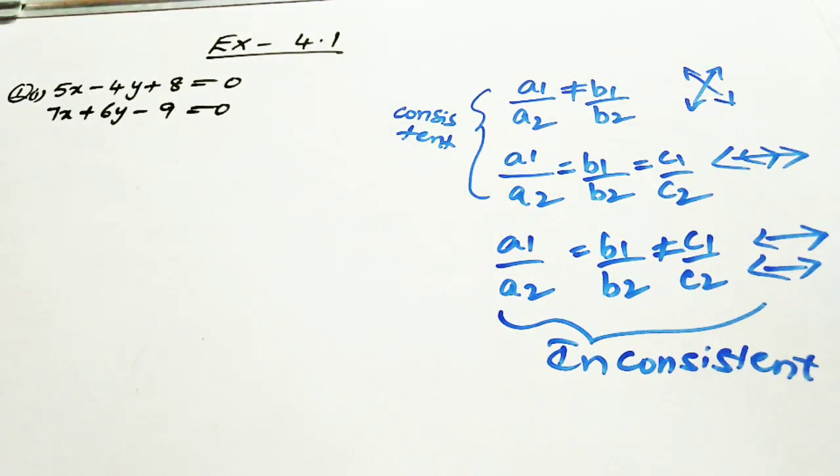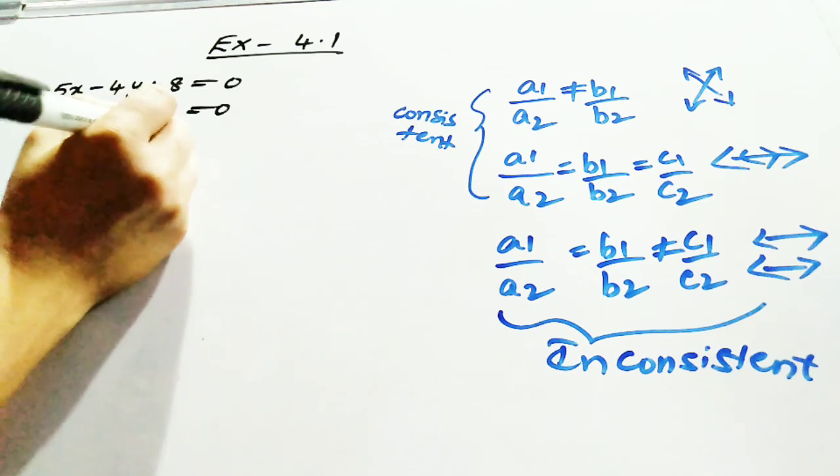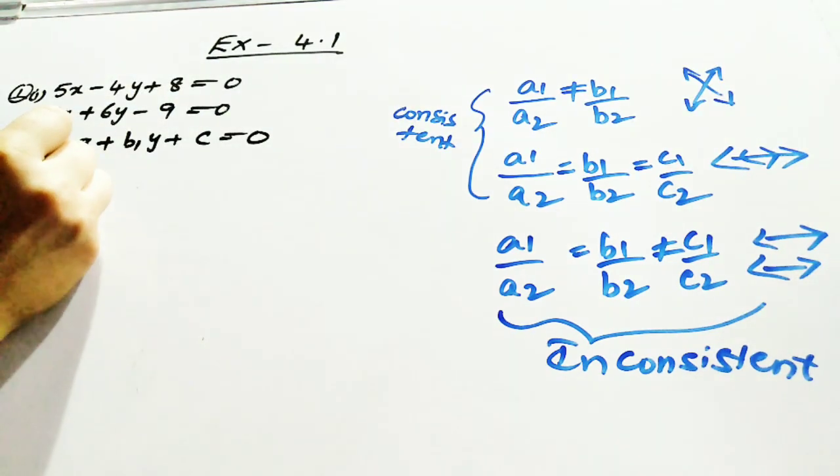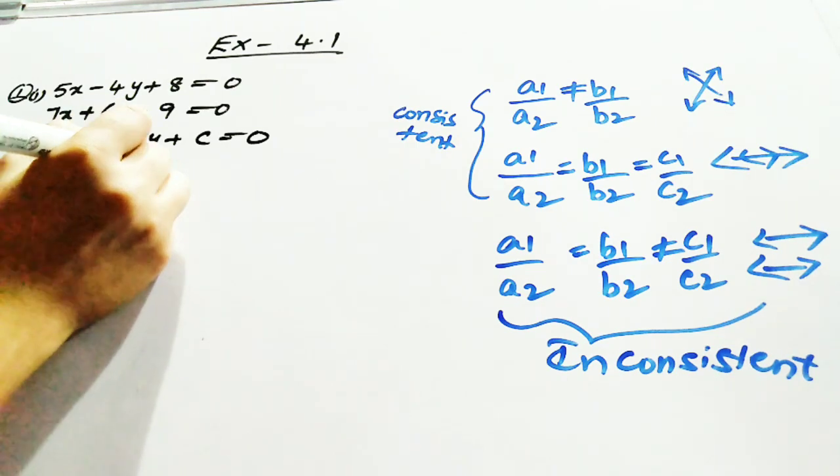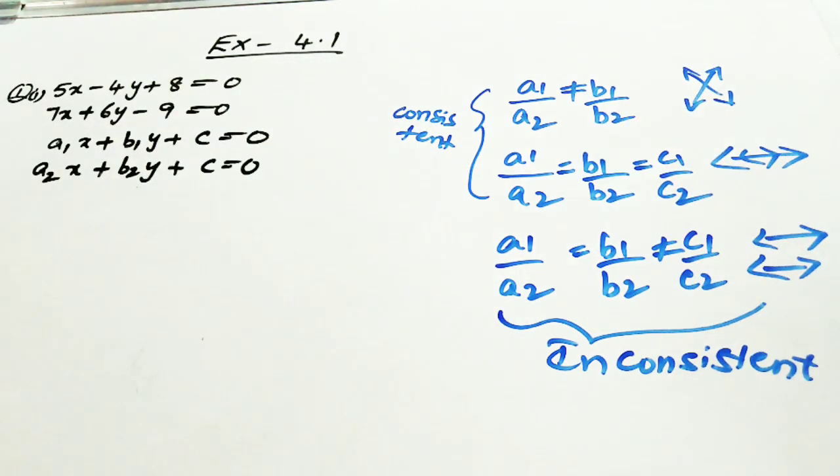What is the first step? Whatever equation you are writing, it must be in the form of a1x plus b1y plus c is equal to 0, a2x plus b2y plus c is equal to 0. It is in the form of this pair of linear equations in two variables.